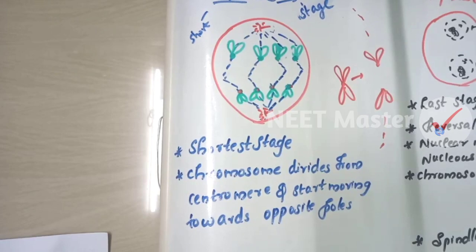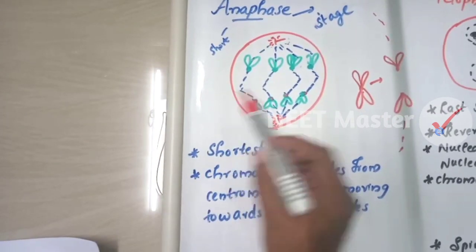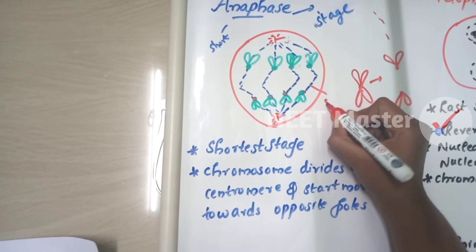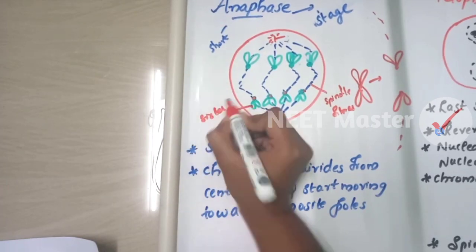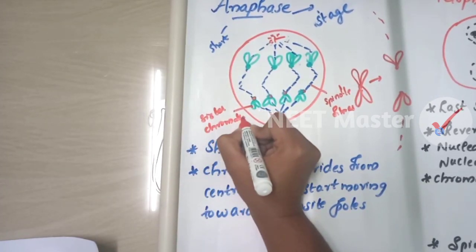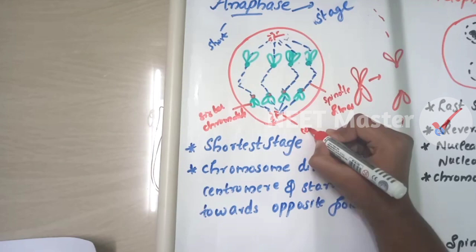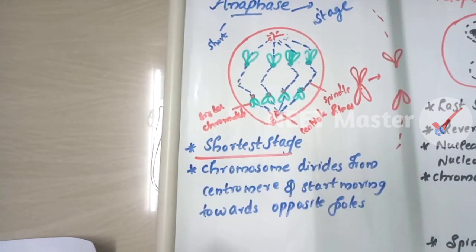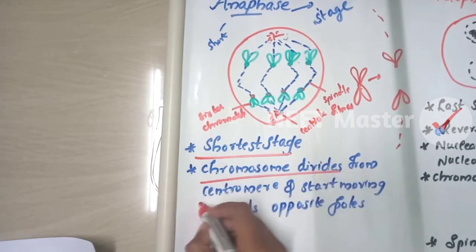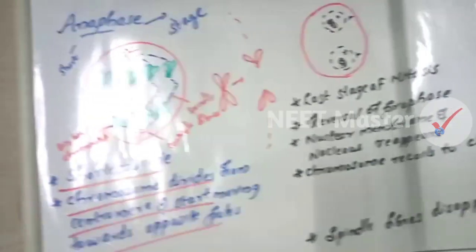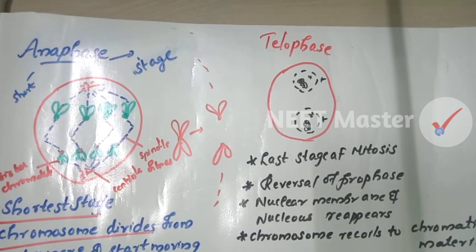Now let's look at anaphase. The chromatids are split and move to two opposite poles. The chromatids separate from the centromere and start moving towards opposite poles. This is the shortest stage of mitosis — chromosomes divide from the centromere and move toward opposite poles.